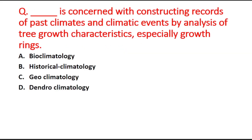Next question: Blank is concerned with constructing records of past climates and climatic events by analysis of tree growth characteristics, especially growth rings. Option A is bioclimatology, B is historical climatology, C is geoclimatology, and D is dendroclimatology. The right answer is option D, dendroclimatology.